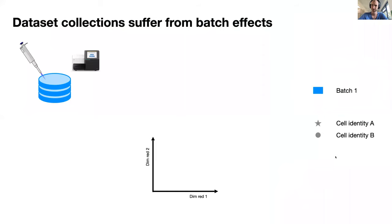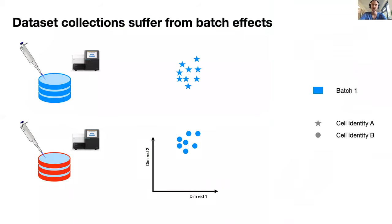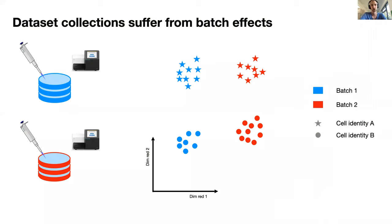Let's take a step back. If a dataset is generated at one point and you process the data, you perform a latent space embedding of this, you see your cells typically looking somewhat like this, separated by cell identity, and looking kind of nice if it works. Now, if you perform a second experiment, or if a different lab does this at a later time point, typically you do the same thing and you want to embed the data in the same space, but you see that cell identities no longer match but are separated by what we call a batch effect.